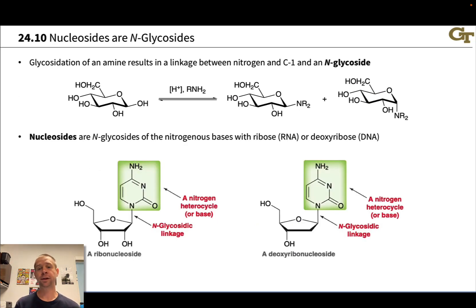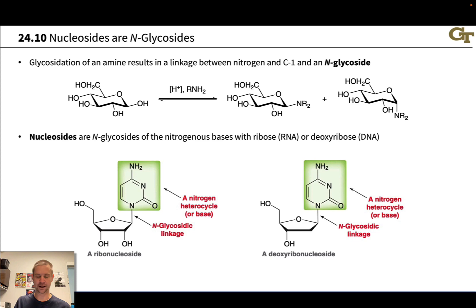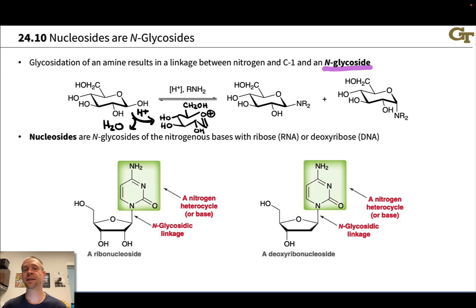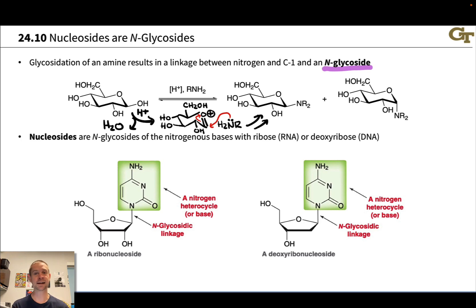When the OH group at carbon-1 is replaced with some nitrogen-containing group — an amino group or related structure — we end up with an N-glycoside. We can understand the mechanism of formation of N-glycosides from the parent sugar by thinking about glycosidation. N-glycosides are made by glycosidating a nitrogen nucleophile. Under acidic conditions, or in the presence of a proton inside an enzyme's active site, we protonate the anomeric hydroxyl and lose water to form the oxygen-stabilized carbocation familiar from carbohydrate reactivity. Nitrogen is a fantastic Lewis base and adds to the electrophilic anomeric carbon, establishing the bond between the anomeric carbon and nitrogen to give the N-glycoside.